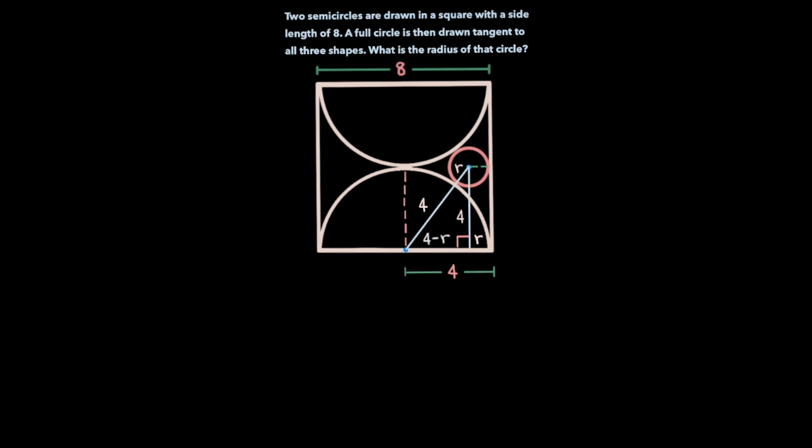Now let's apply the Pythagorean theorem on this right triangle to determine the value of r, which is the radius of the pink circle. If we do so we get (4-r)² + 4² = (4+r)².